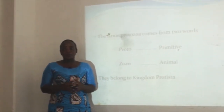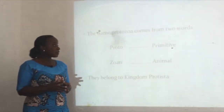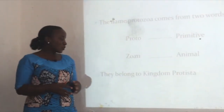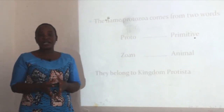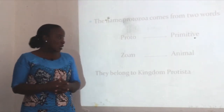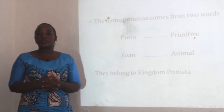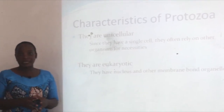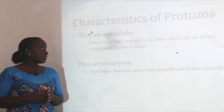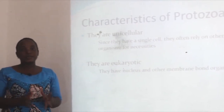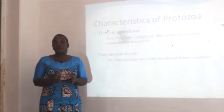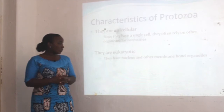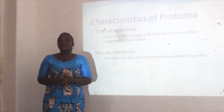The name Protozoa comes from two roots. The first is 'proto' which means primitive, and the second is 'zoa' which means animal. So Protozoa means organisms which are primitive to animals. The protozoans belong to the kingdom called Kingdom Protista. The characteristics of protozoans: they are unicellular, meaning they have only one cell and all life processes occur inside a single cell. Since they have only one cell, they often rely on other organisms for necessities. They are also eukaryotic — their cells have a nucleus and other membrane-bound organelles.